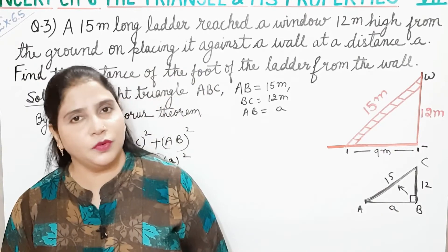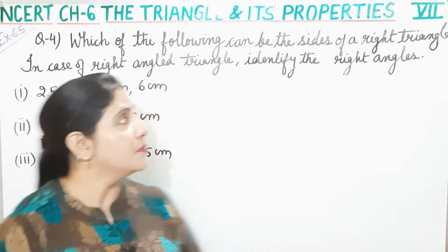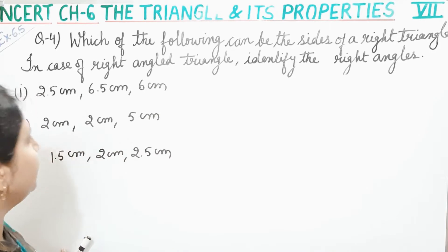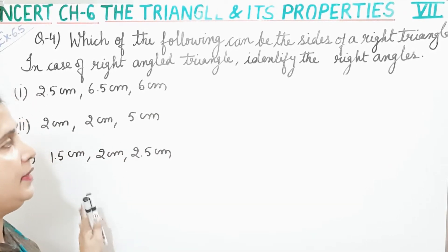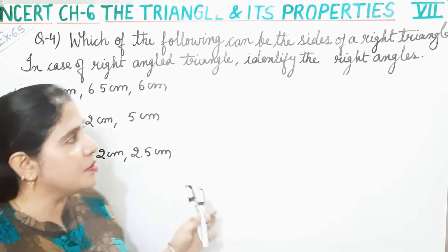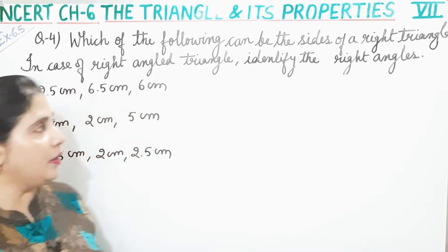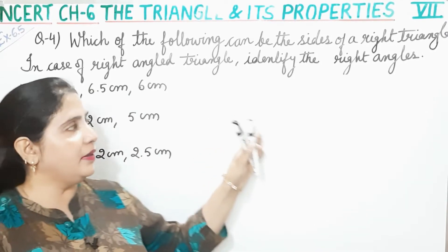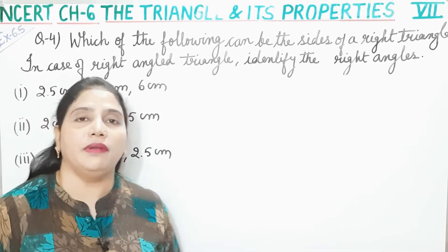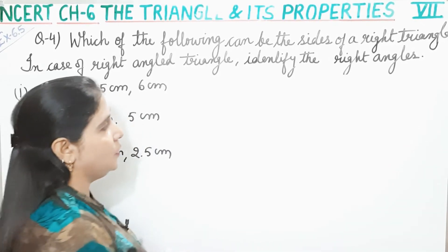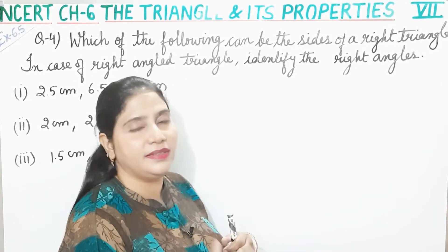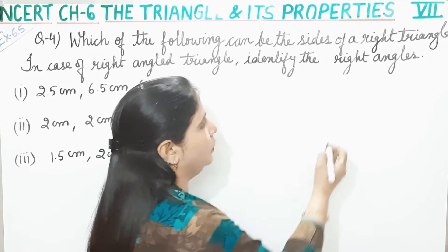So this was question number 3. Now let's move to question number 4. Which of the following can be the sides of a right triangle? In case of a right angle triangle, identify the right angle. Hamein batana hai in mein se kaun si sides right triangle ki hain. Toh right triangle ke liye jo longest side hoti hai, uska jo square hota hai woh barabar hota hai other two sides ke square ke sum ke barabar — jise hum Pythagoras theorem kehte hain.